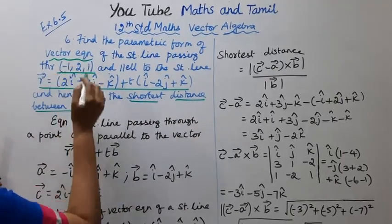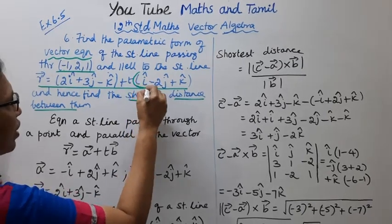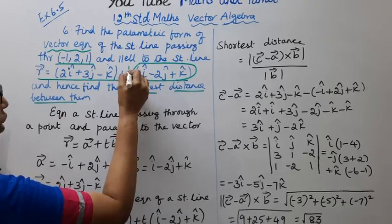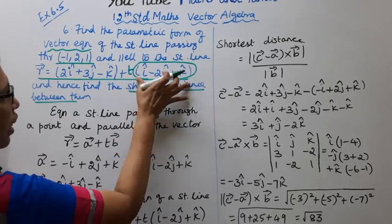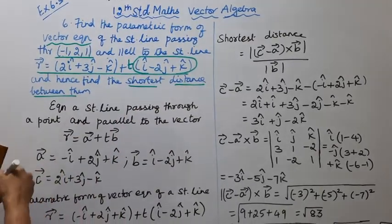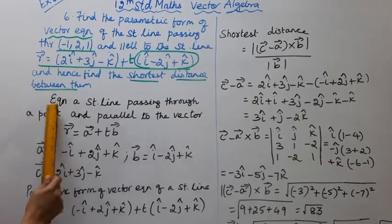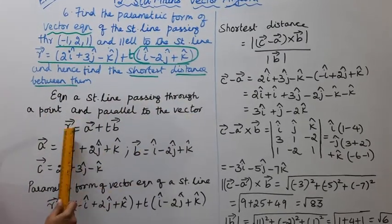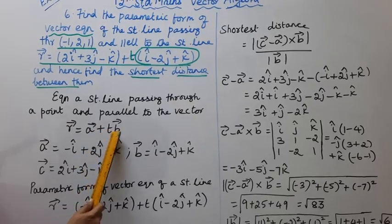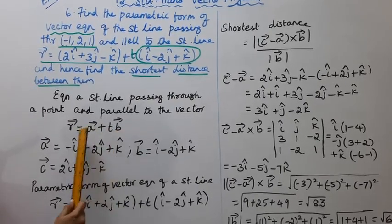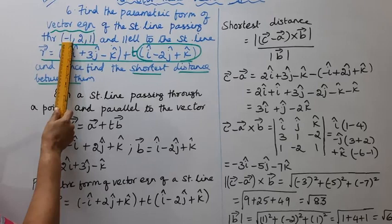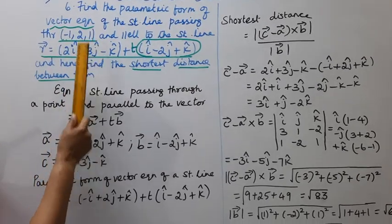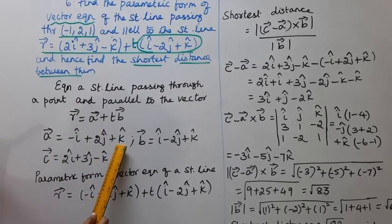Passing through a point and parallel to a vector. The equation of the straight line passing through a point and parallel to the vector is: R vector equal to a vector plus t times b vector. Here, a vector is the point vector: minus i-cap plus 2j-cap plus k-cap.